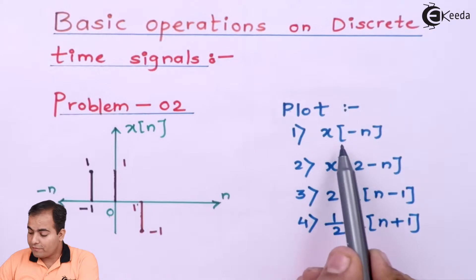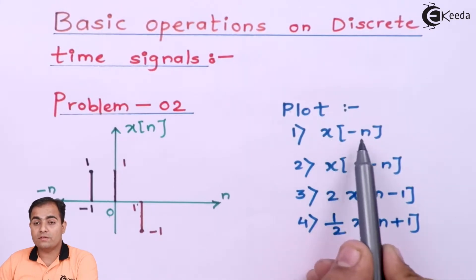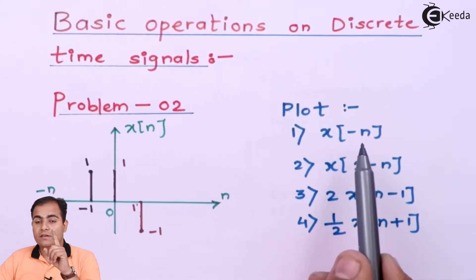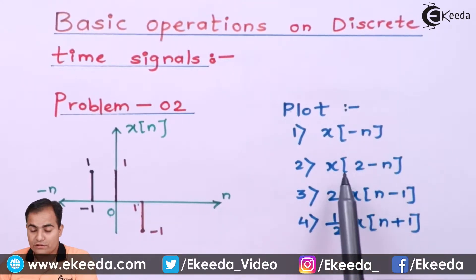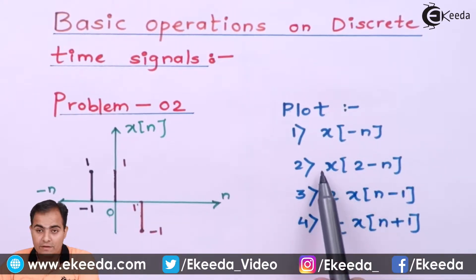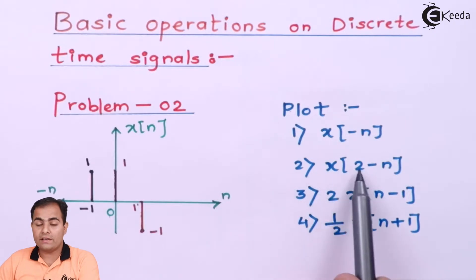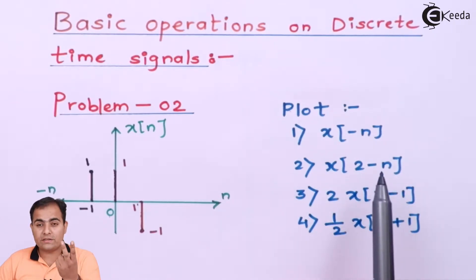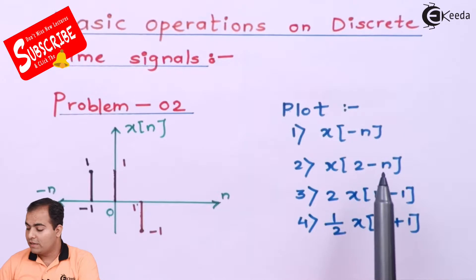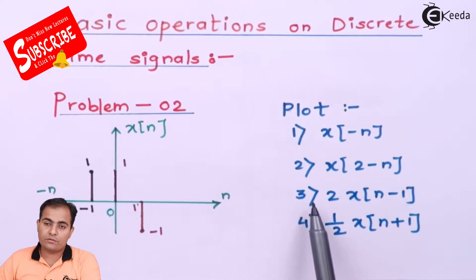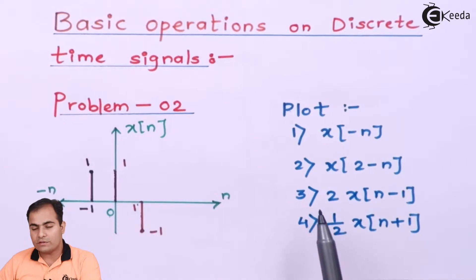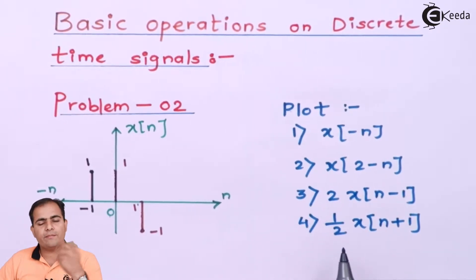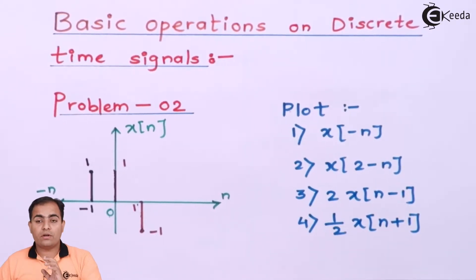In the first case, we have x of minus n — this is the time reversal property studied in previous sections. The second part is x of 2 minus n, where we solve two properties: time shifting and time scaling. The third part involves time scaling and amplitude scaling, and the fourth case also combines time scaling and amplitude scaling.